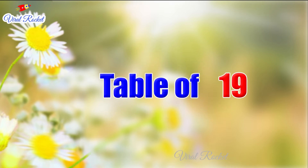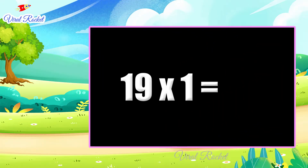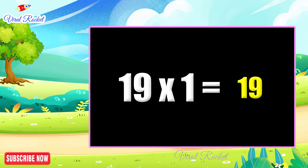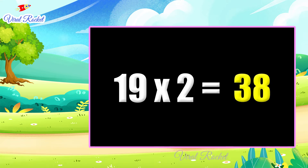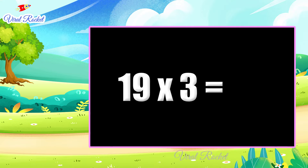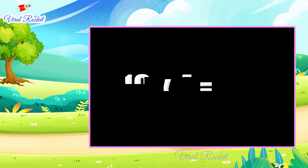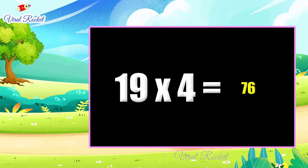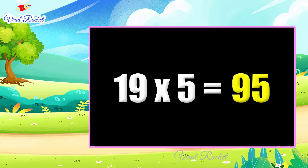Table of 19: 19 × 1 = 19, 19 × 2 = 38, 19 × 3 = 57, 19 × 4 = 76, 19 × 5 = 95.